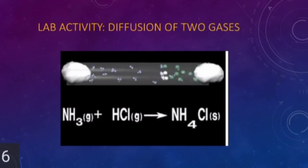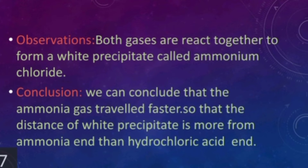Both gases react together to form white fumes of ammonium chloride. Observe the white ring in the tube due to formation of ammonium chloride. How did the two gases travel along the tube? Which gas traveled faster? Observations: both gases react together to form a white precipitate called ammonium chloride. Conclusion: ammonia gas traveled faster, so the distance of the white precipitate is greater from the ammonia end than from the hydrochloric acid end.